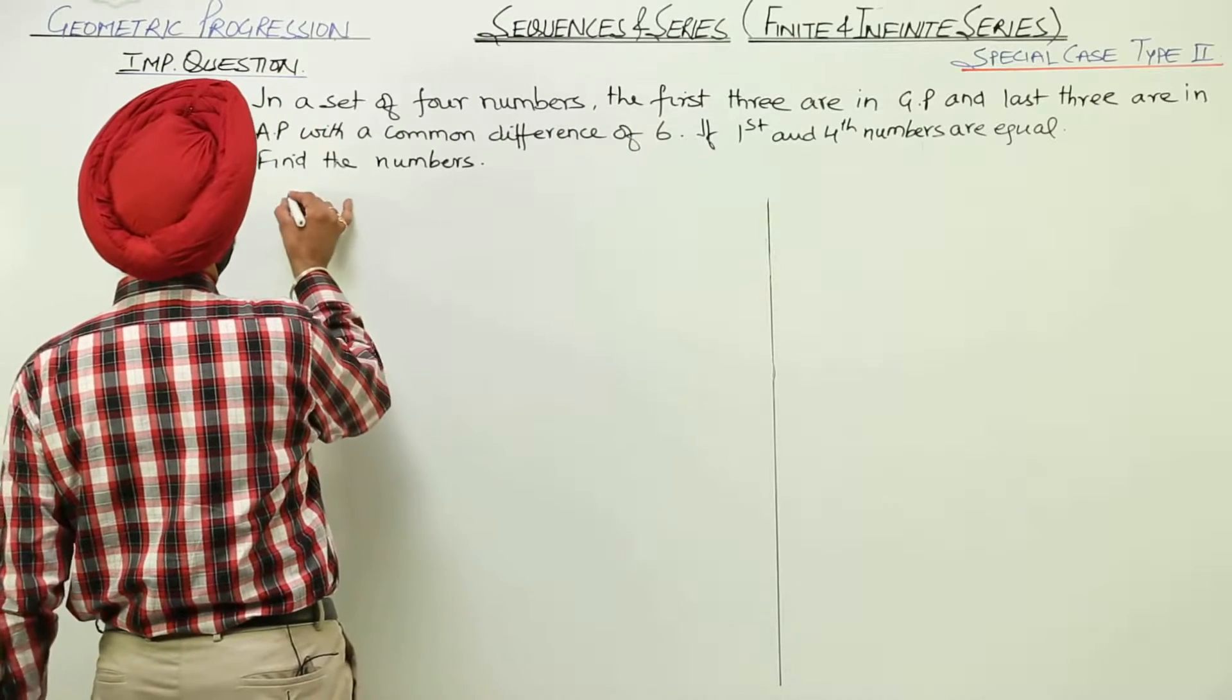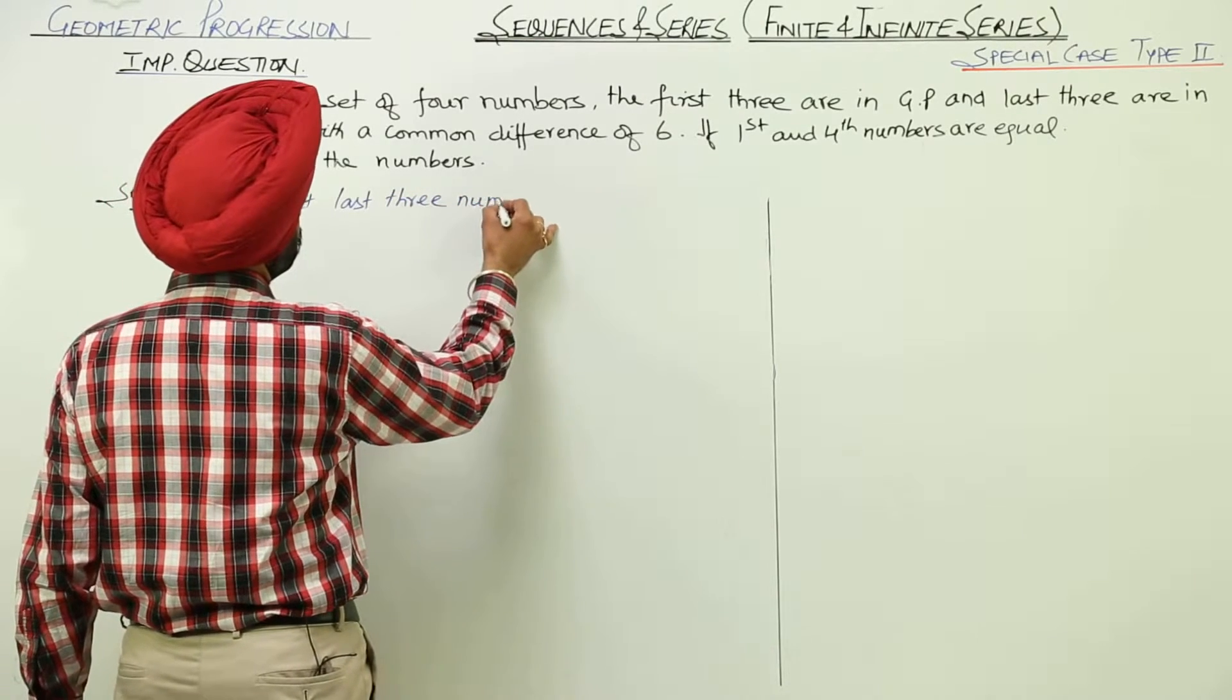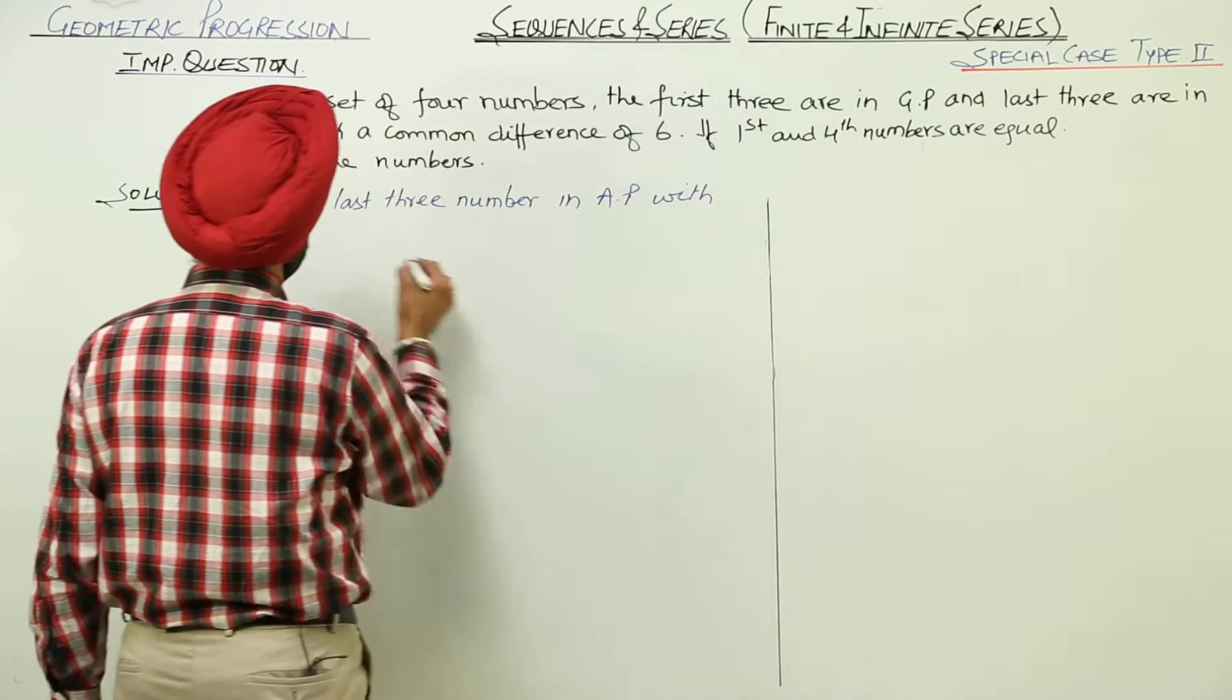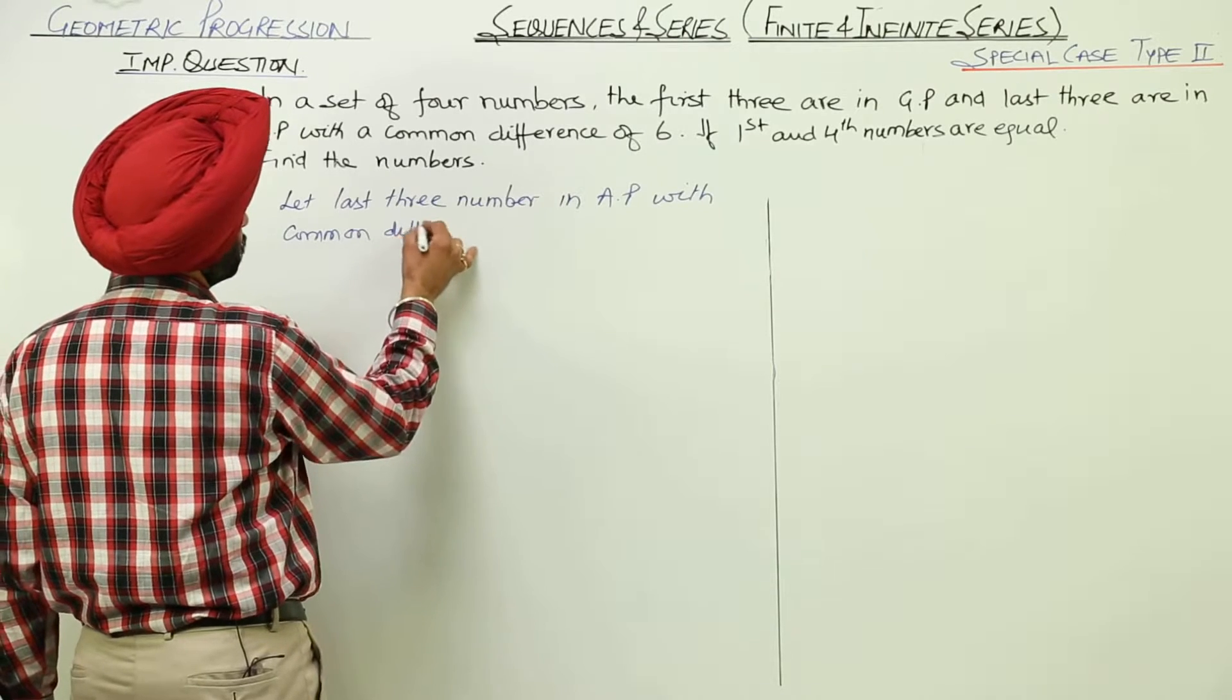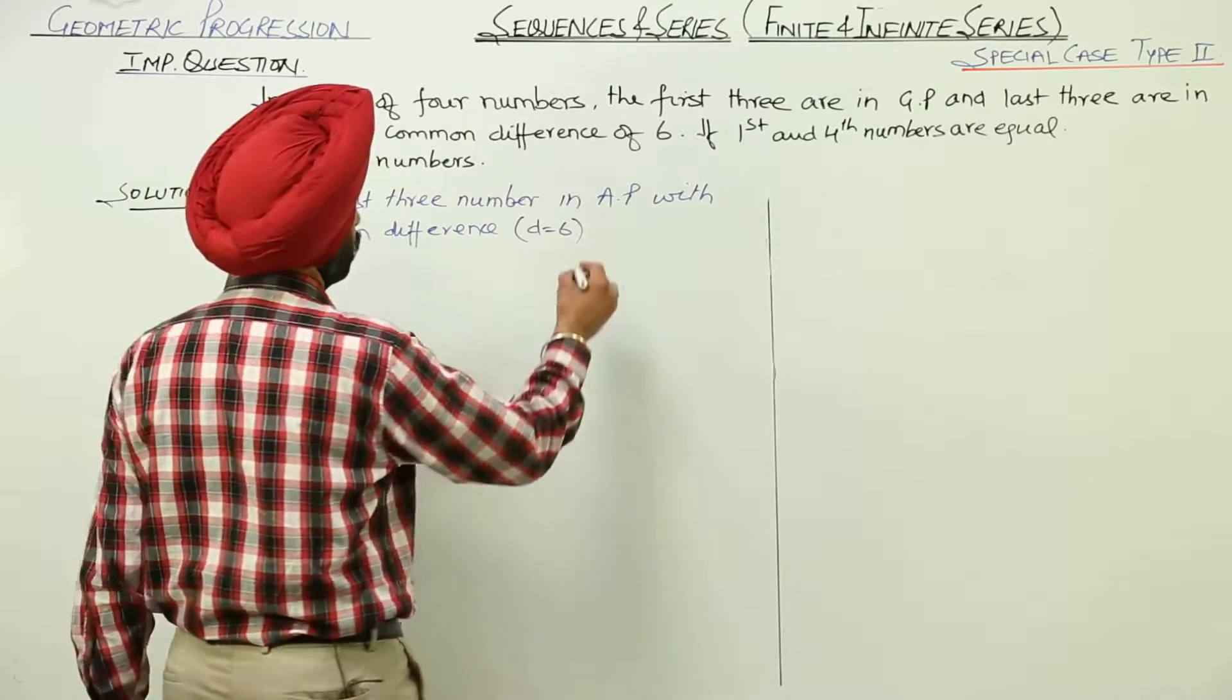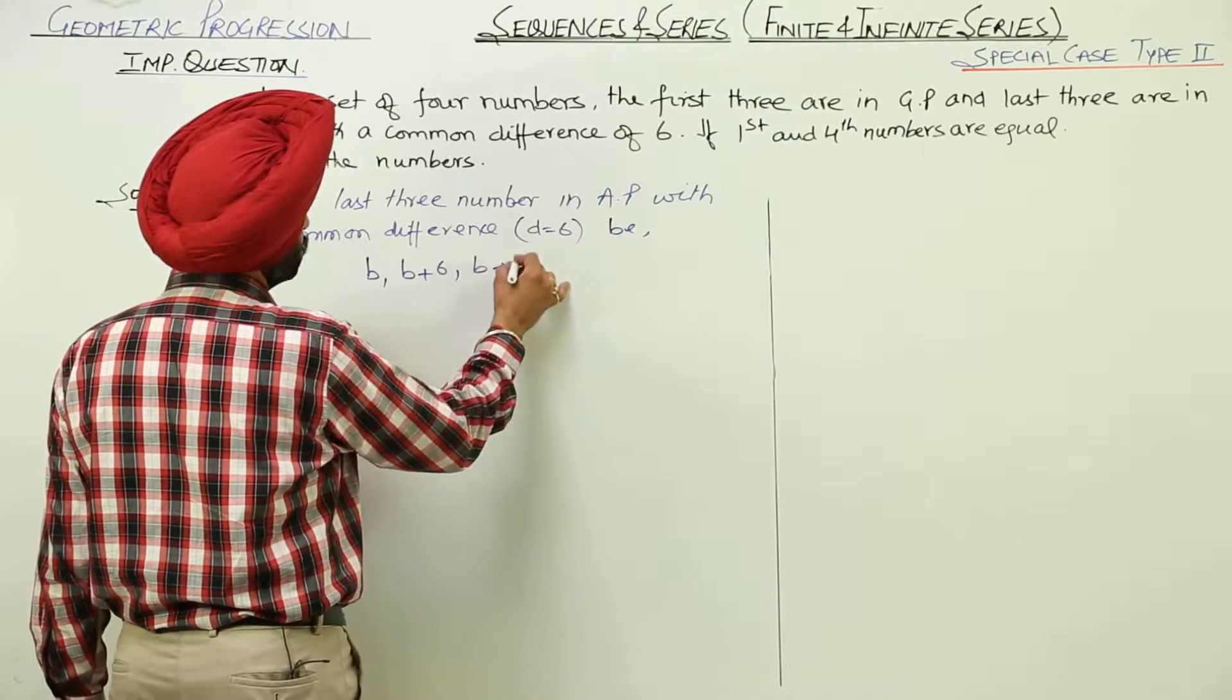Let last 3 numbers in AP with common difference 6. With common difference that is D is equal to 6, B, B plus 6 and B plus 12.